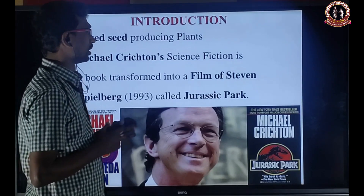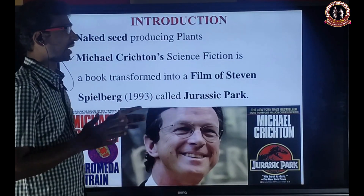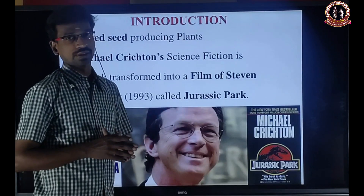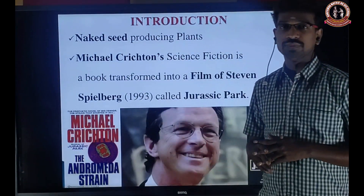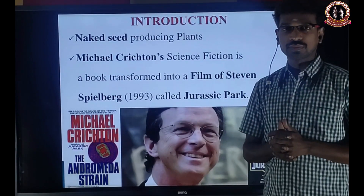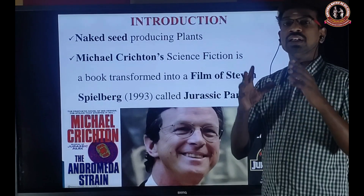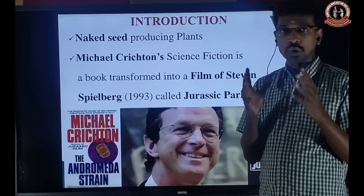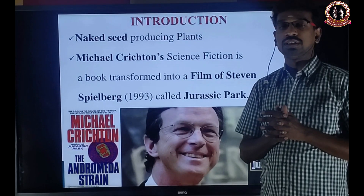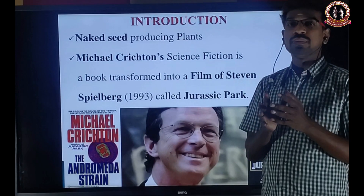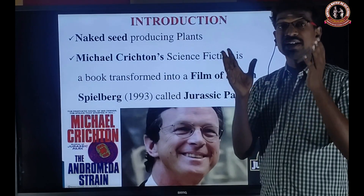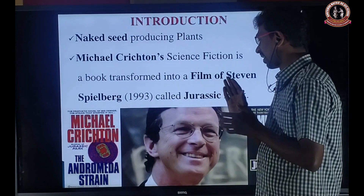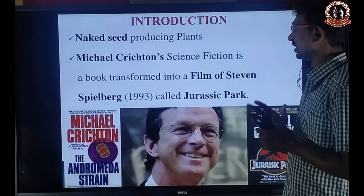The Michael Crichton science fiction book comes under the film of Steven Spielberg in 1993 called Jurassic Park. I think most of the people will watch this film, Jurassic Park. So in the Jurassic era — what is the Jurassic era? That means under time, in geological time scale, the abundant animals are Jurassic animals. At that time, we can see most of the gymnosperms are abundant in the world, during the Jurassic era. This book was later written from the film Jurassic Park by Steven Spielberg.